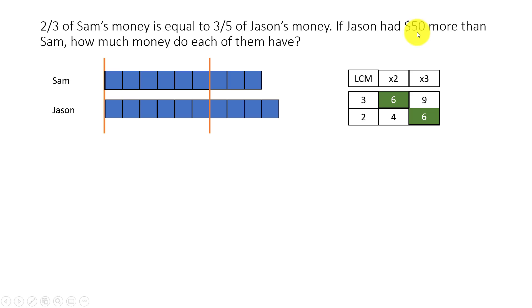Now we go back to the question. If Jason had $50 more than Sam, how much money do each of them have? Jason has one unit more than Sam, which means that this one unit is equal to $50.